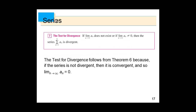The contrapositive is: if the limit of a_n is not 0, then the sum of a_n from 1 to infinity is divergent. This is known as the Test for Divergence. You can only use this to show that a series is divergent — you cannot use it to show convergence. If the limit of a_n does not exist or is not equal to 0, then the series is divergent.